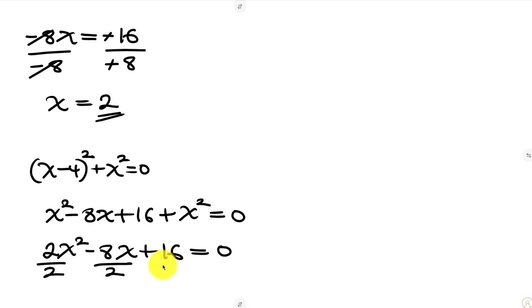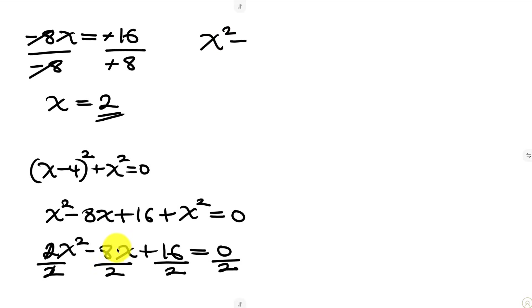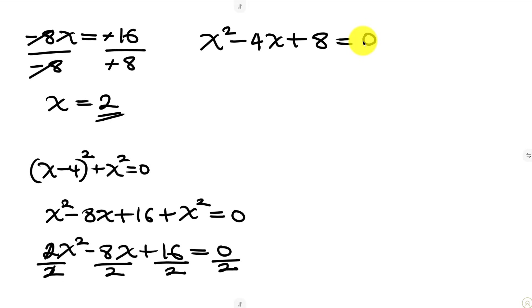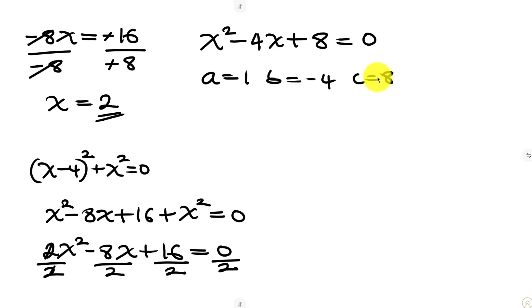Notice that 2 can divide through, so I'm going to be dividing through by 2. Dividing each term by 2: we have x squared minus 4x plus 8 equals 0. We can now use the quadratic formula to solve this, where a is 1, b is negative 4, and c is 8.